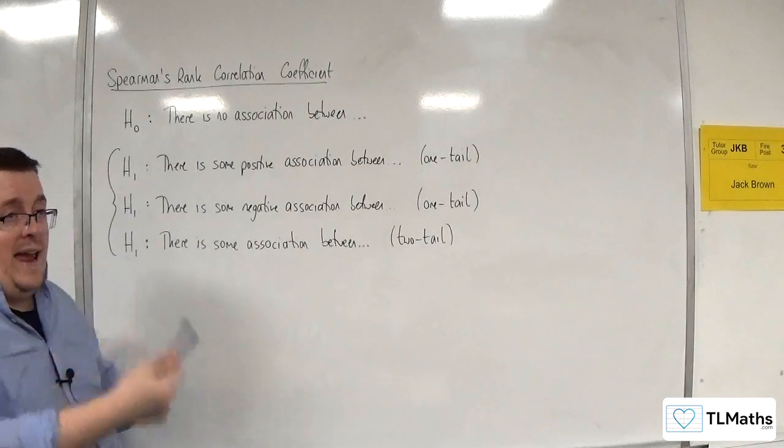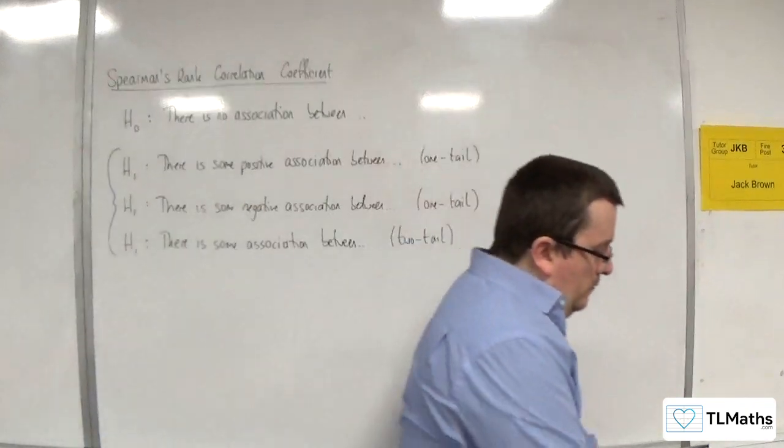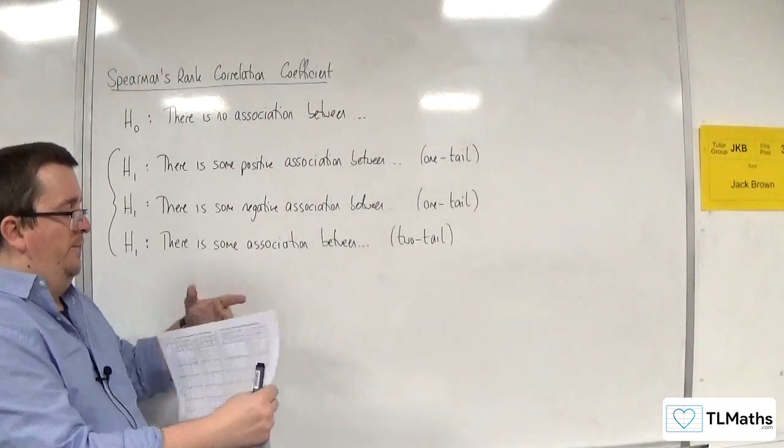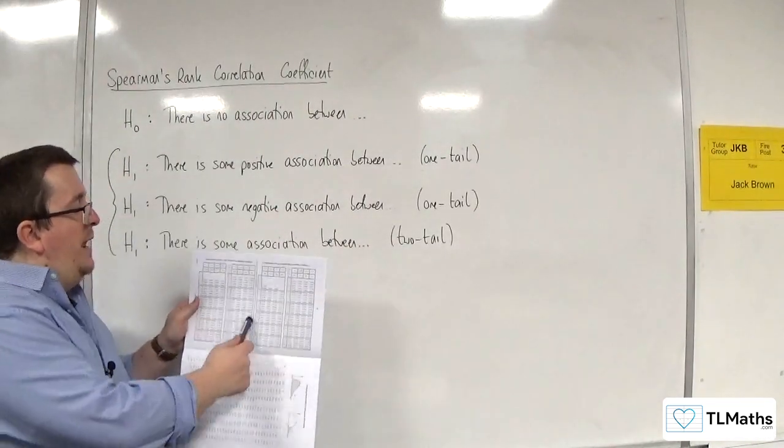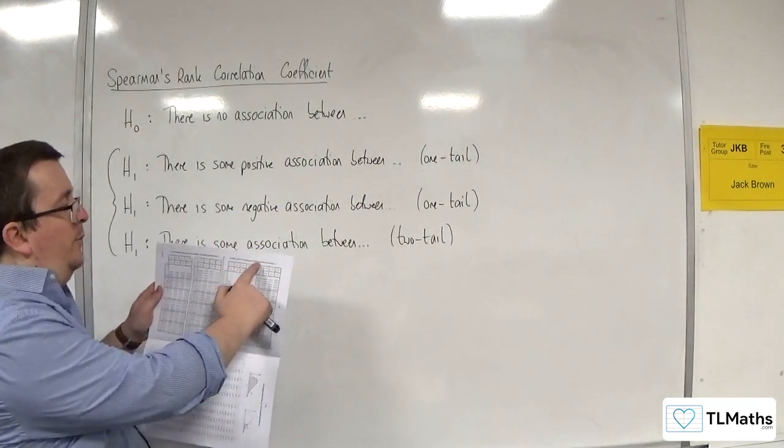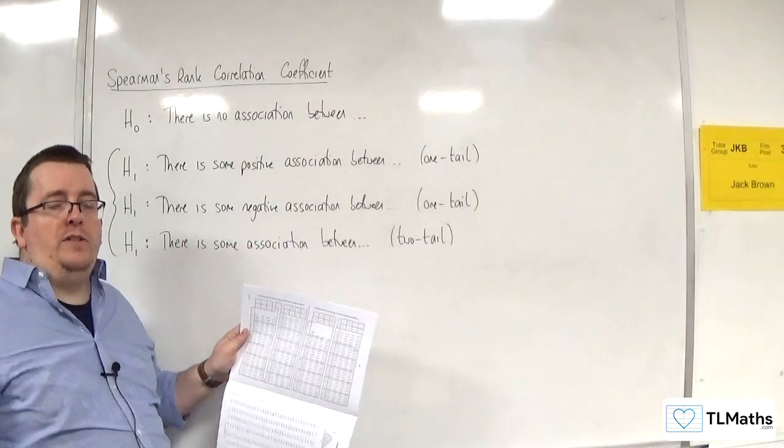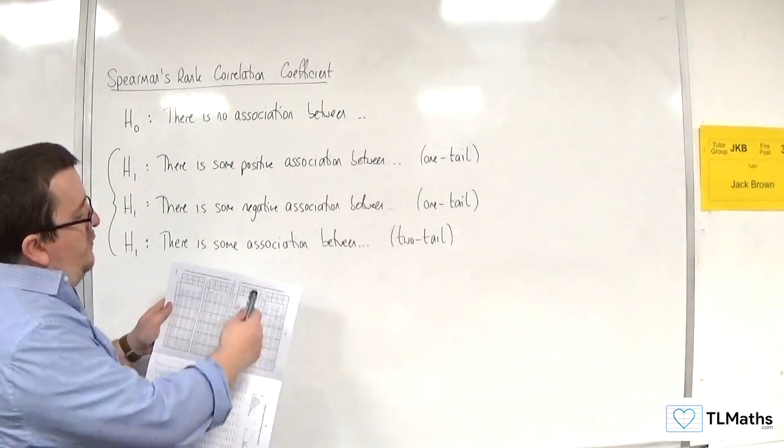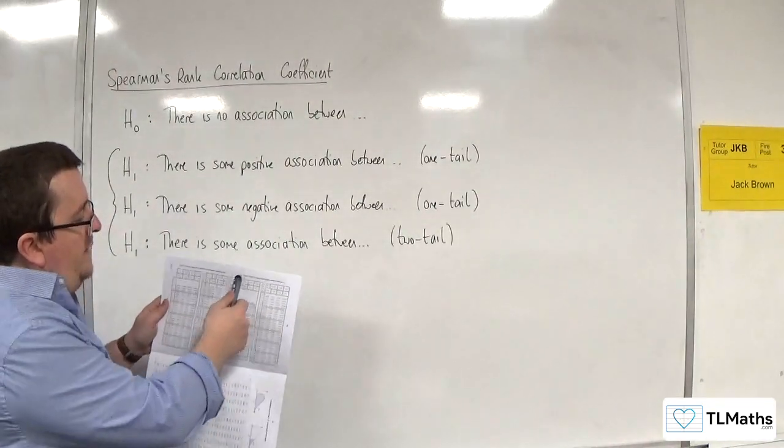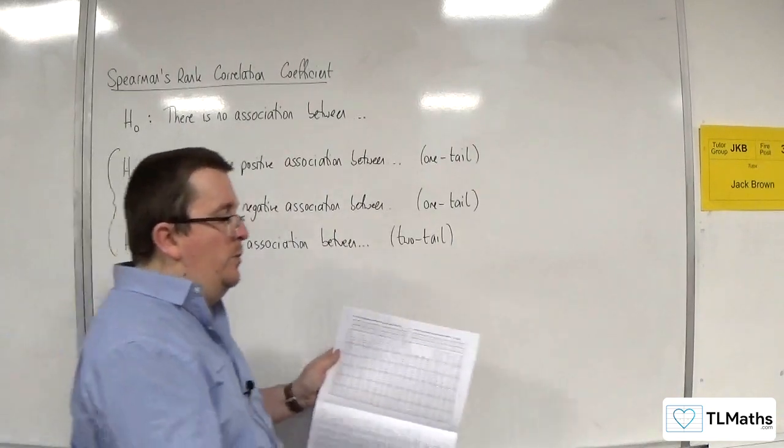We'll have an N, a number of our bits of data, and then we will go to the formula booklet, to page 12. Instead of looking at the left-hand side, we're going to look at the right-hand side. It tells you at the top critical values for Spearman's rank correlation coefficient, and you read these off in precisely the same way as you did with the PMCC ones. You've got one-tailed and two-tailed tests at the top. You go along to the significance level, and then you go down to the correct N value, and then you read off your critical value. We would write that down.